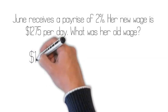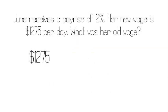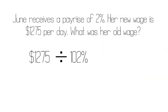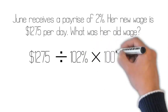Let's use the unitary method. Take our quantity, $1,275, divide by what we've got, which is 102%, times by what we want, which is 100%.